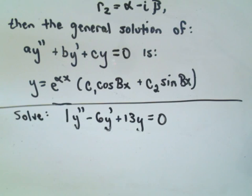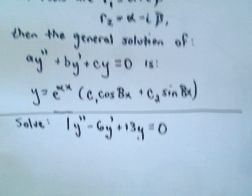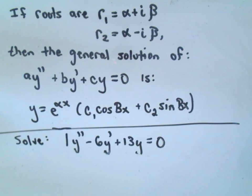If the roots are of the form α ± βi, then the general solution of this differential equation is going to be of the form e^(αx) times the quantity C₁cos(βx) + C₂sin(βx).